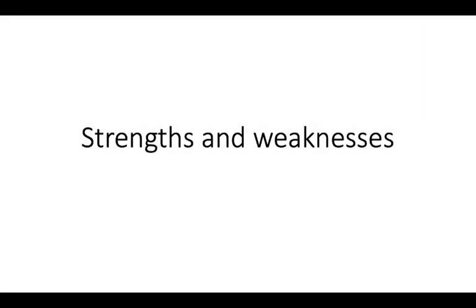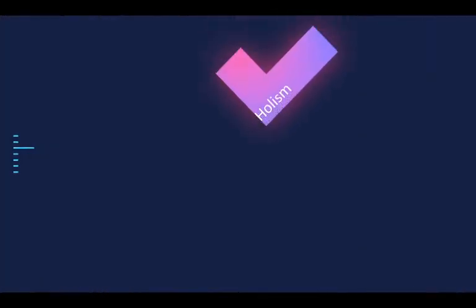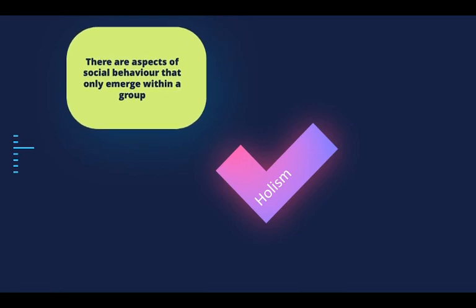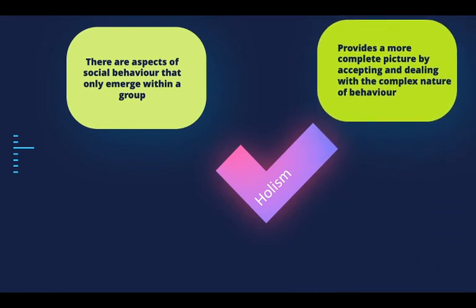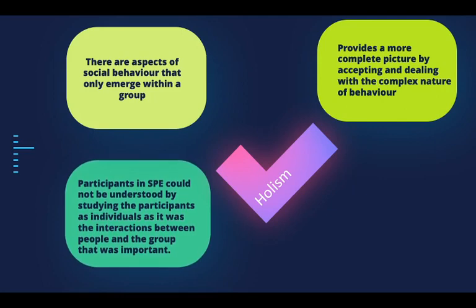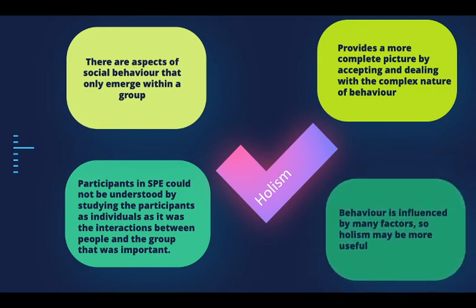Looking at the strengths and weaknesses of the different positions: a strength of holism is that there are aspects of social behavior that only emerge within a group. Think of the Stanford Prison Experiment — it provides a more complete picture by accepting and dealing with the complex nature of behavior. The participants could not be understood by studying them as individuals; it was the interactions between people and the group that was important. These people were not exhibiting any form of aggression prior to the experiment, but when thrown into that circumstance, looking at the whole picture shows what is really going on. So holism may be more useful when behavior is influenced by many factors.